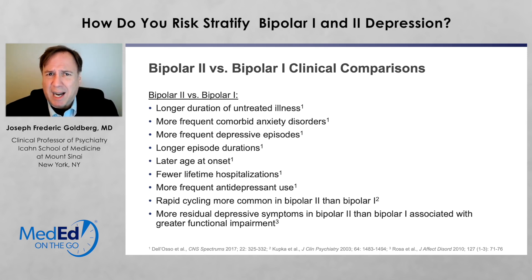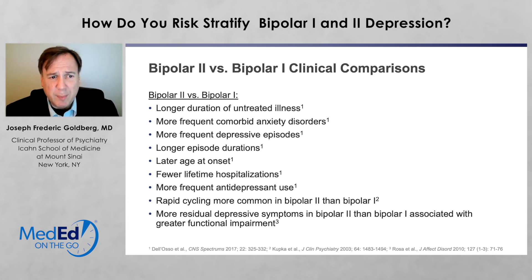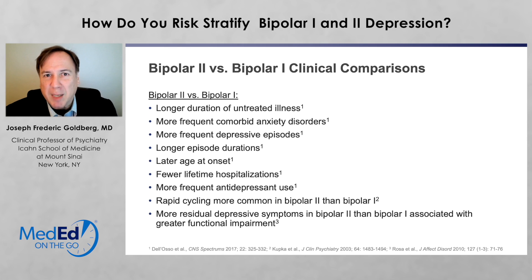There tend to be more frequent comorbid anxiety disorders or even just symptoms. Anxiety is a common co-occurring phenomenon in people with bipolar disorder, but especially so in bipolar II. The frequency of depressive episodes and durations of depressions tend to be longer in bipolar II than bipolar I disorder. The age at onset tends to be somewhat later in bipolar II than bipolar I disorder. Fewer lifetime hospitalizations — though in bipolar II, if hospitalizations occur, they're by virtue of the depressions, not the manias. The disability comes from the depression side more so than the high side.